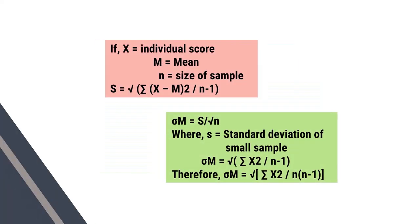If X represents individual score, M is equal to mean, and n is the sample size, then S is equal to the square root of the sum of (X minus M) squared, divided by n minus 1. Sigma-m is equal to S divided by the square root of n, where S is the standard deviation of the small sample. Sigma-m is also equal to the square root of the sum of the squared scores divided by n minus 1.